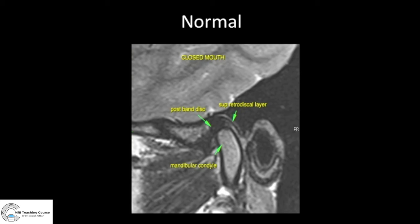Now let's look at normal and abnormal. On the normal sagittal PD image, you can see the mandibular condyle and the articular disc — it looks just like a knee meniscus. It's fibrous tissue so it appears dark, with a bow-tie-like appearance. The normal position of the articular disc is such that the posterior portion — not the central portion — is above the mandibular condyle.